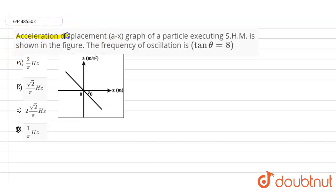It is given that an acceleration-displacement (a versus x) graph of a particle executing simple harmonic motion is shown in the figure. The frequency of the oscillation is what we need to find out.